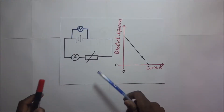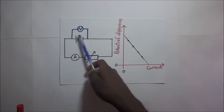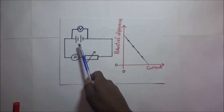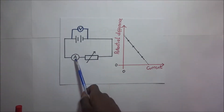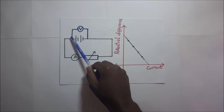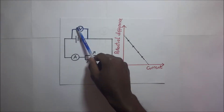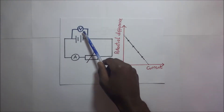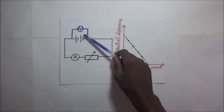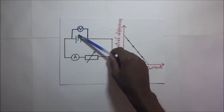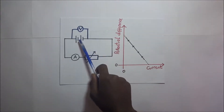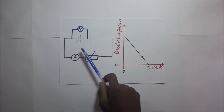If you look at this setup, we have a circuit right here. We have two cells, a rheostat and an ammeter. Across the cell, we have a voltmeter connected, and this voltmeter is meant to give us the potential difference across the terminals of this cell.